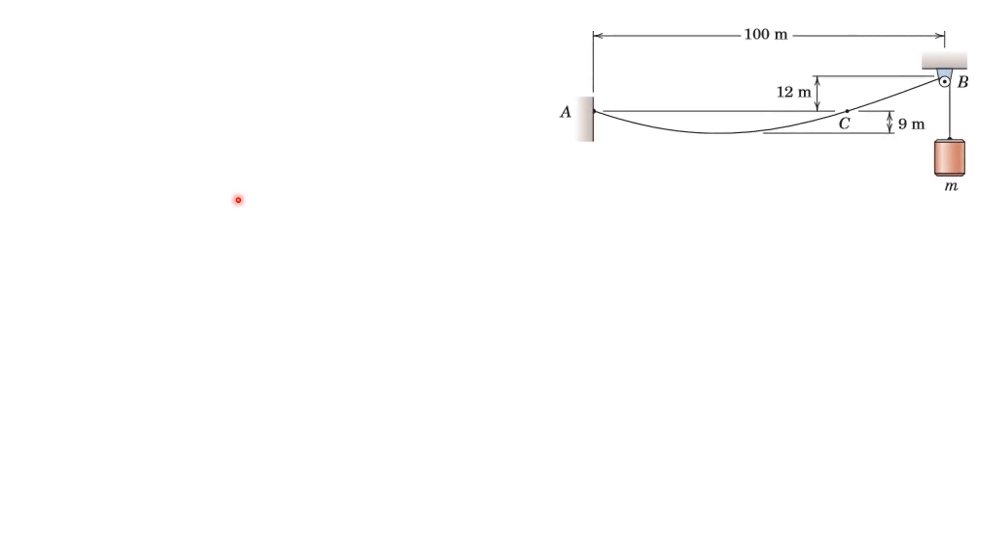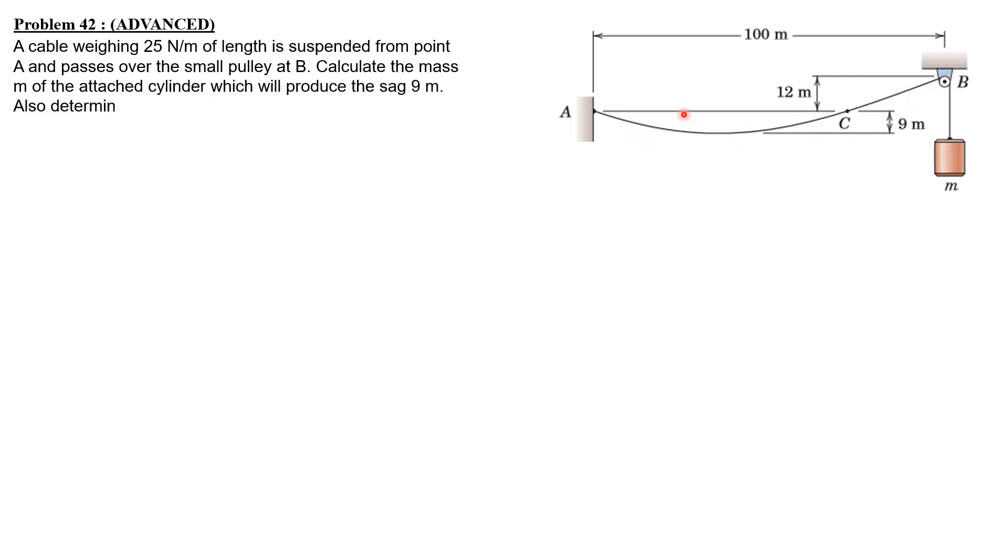Let's have the solution to example 42. A cable weighing 25 newtons per meter is suspended from point A and passes over the small pulley at B. This is strictly a catenary cable, however we can use the approximate parabolic approximation.